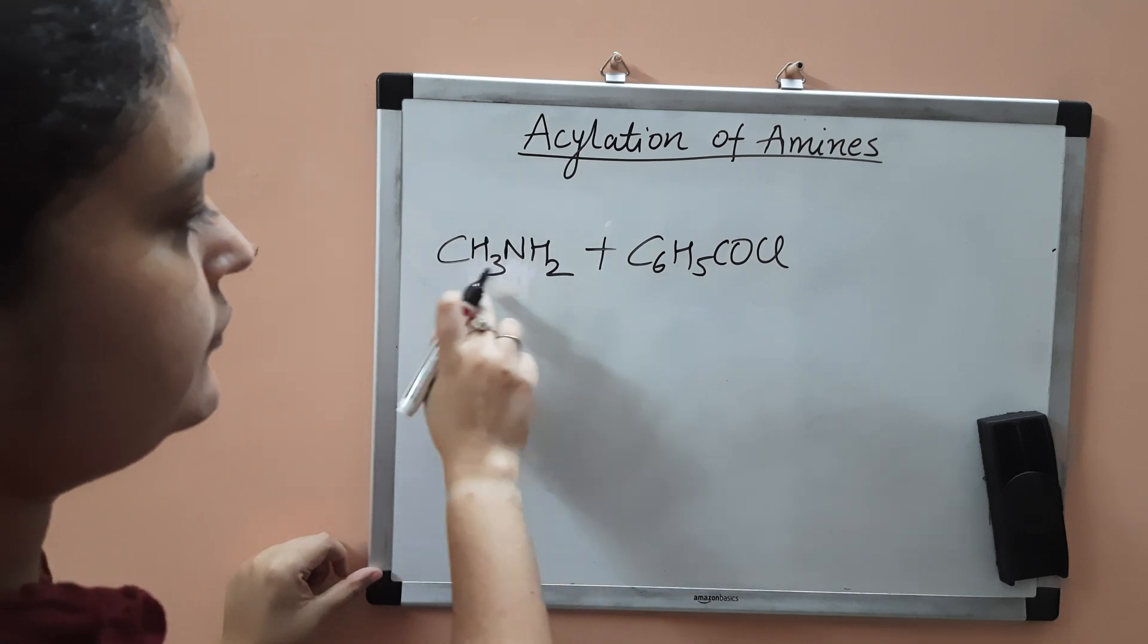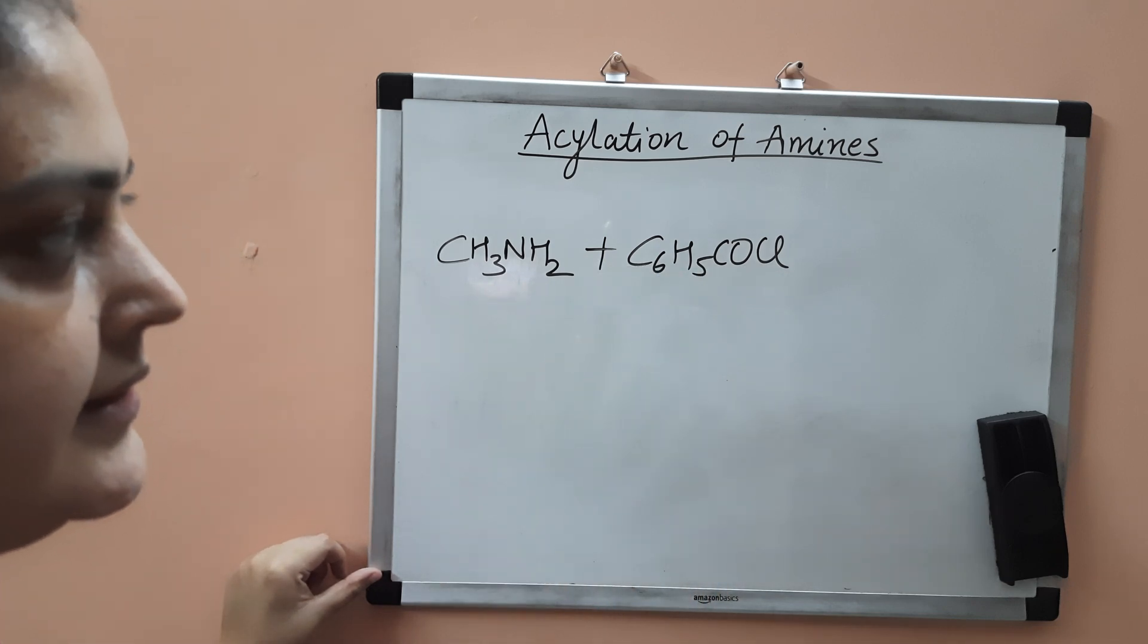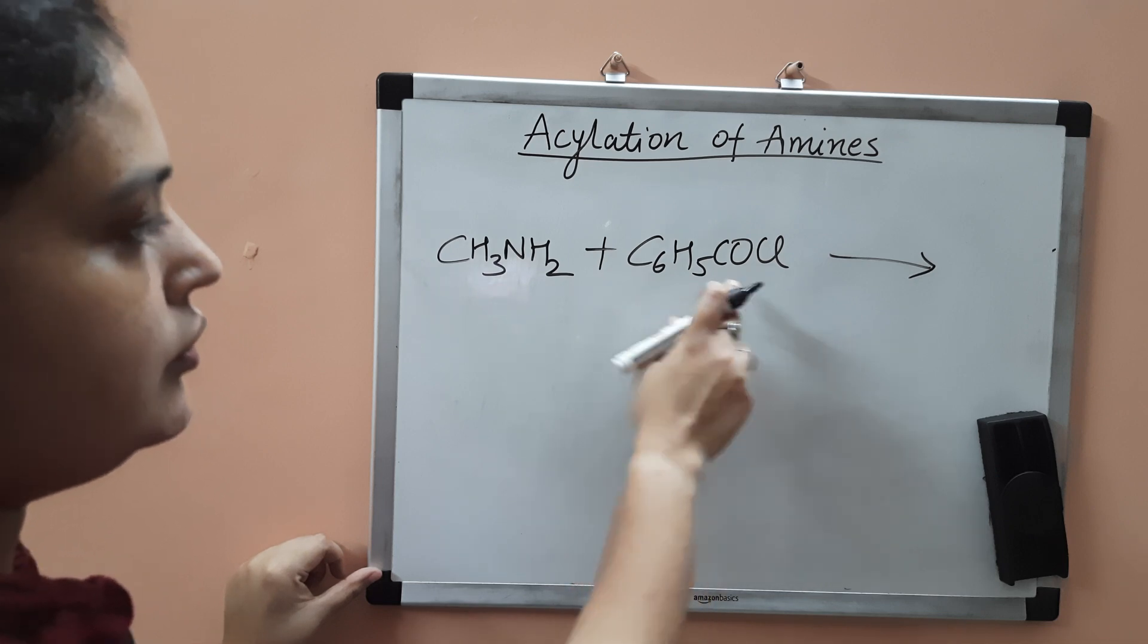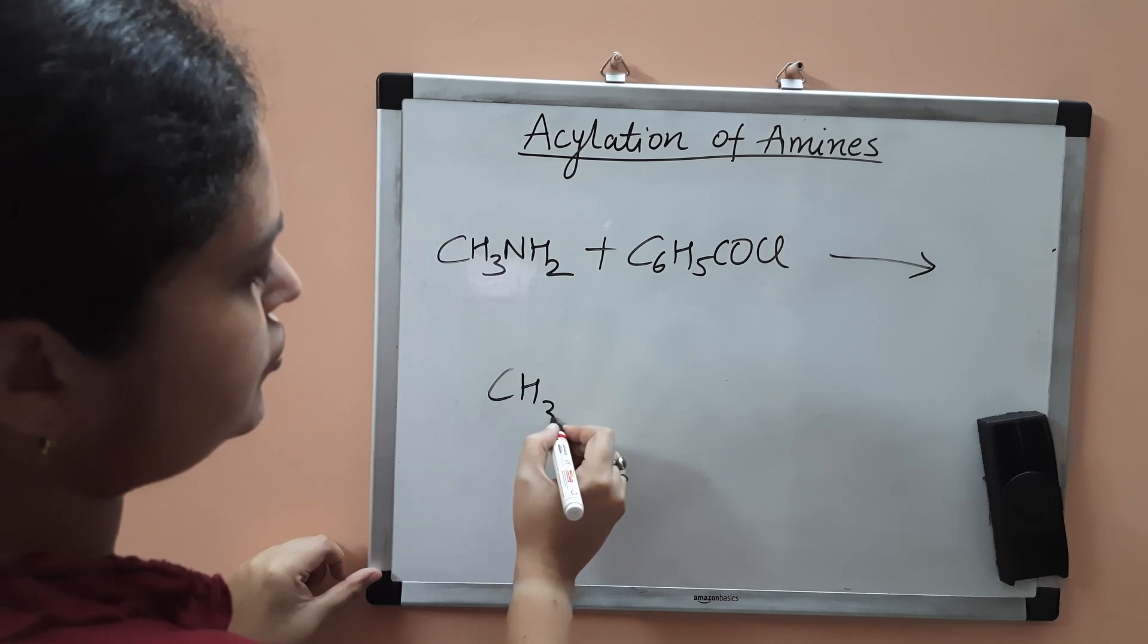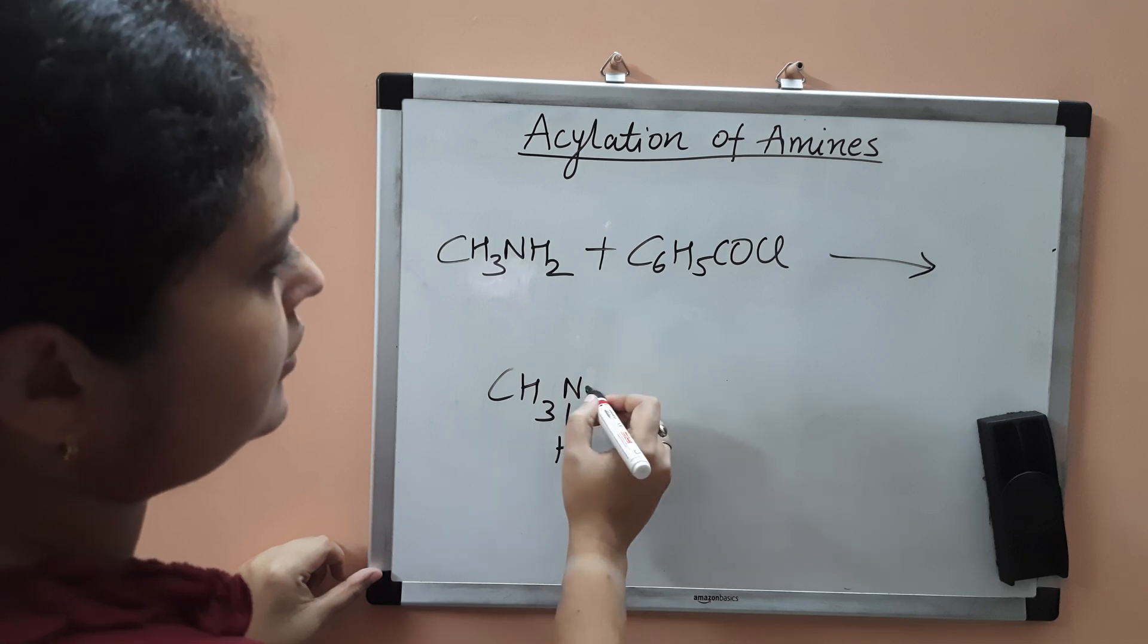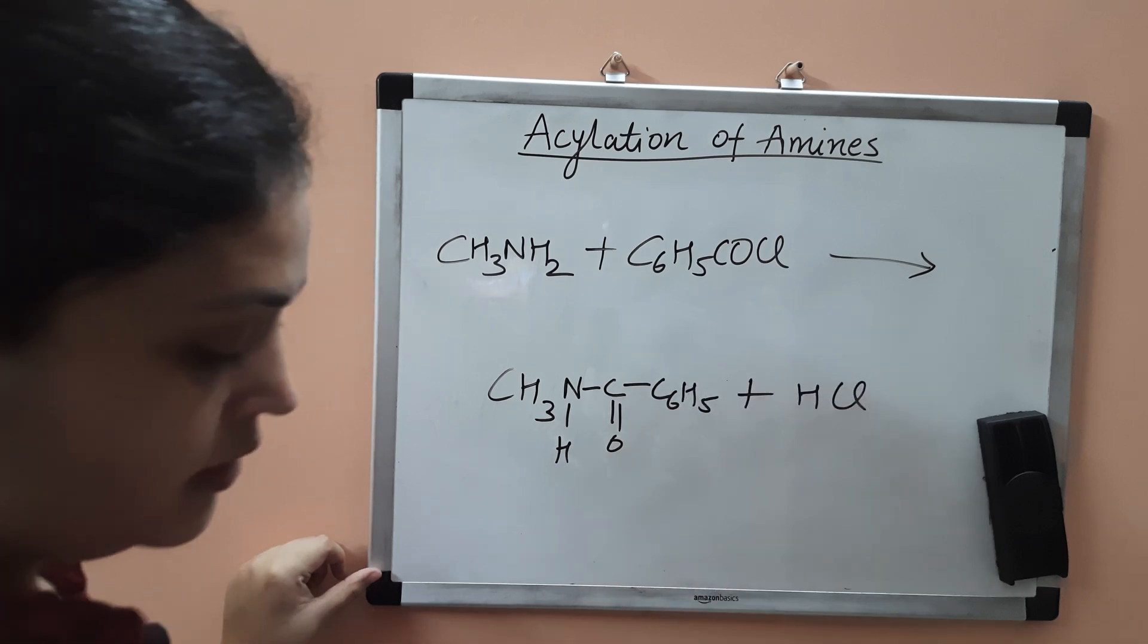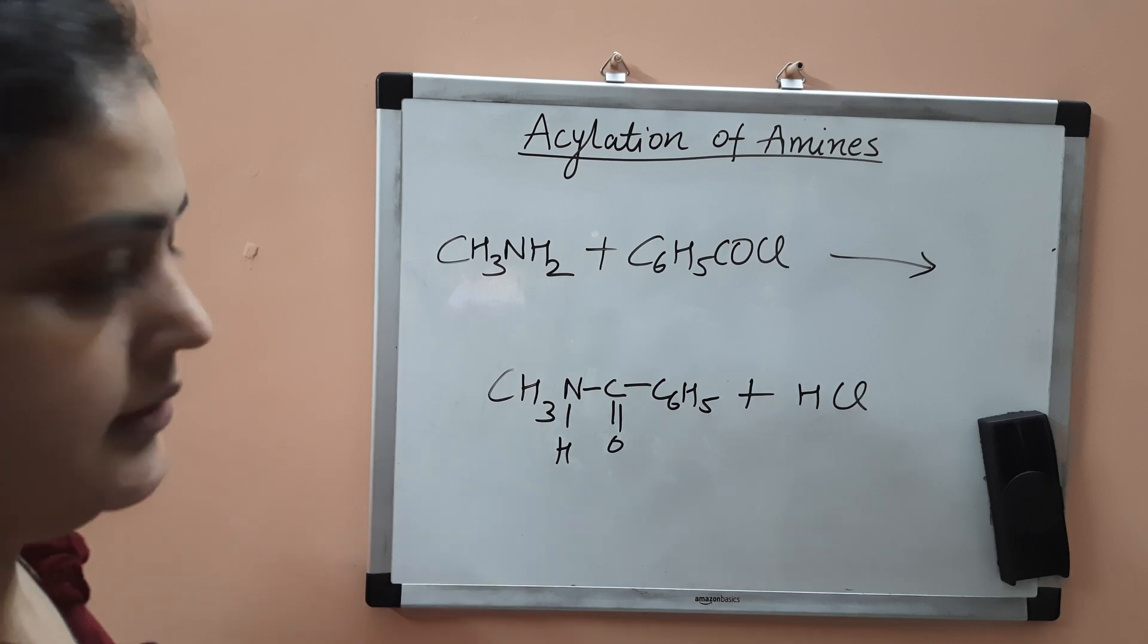The hydrogen atom from amine and chlorine from acid chloride will be removed as HCl. The acyl group C6H5CO will be attached to your CH3NH group. You will get CH3NHC double bond OC6H5 and HCl as your product. This is N-methyl benzene amide.